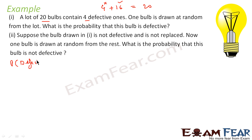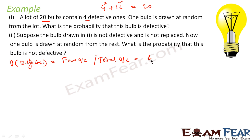Using the same formula: probability of defective = favorable outcome of defective / total outcome. The favorable outcome is 4 because there are only 4 defective bulbs, and total outcome is 20. This becomes 4/20 = 1/5. So the probability of drawing a defective bulb is 1/5.